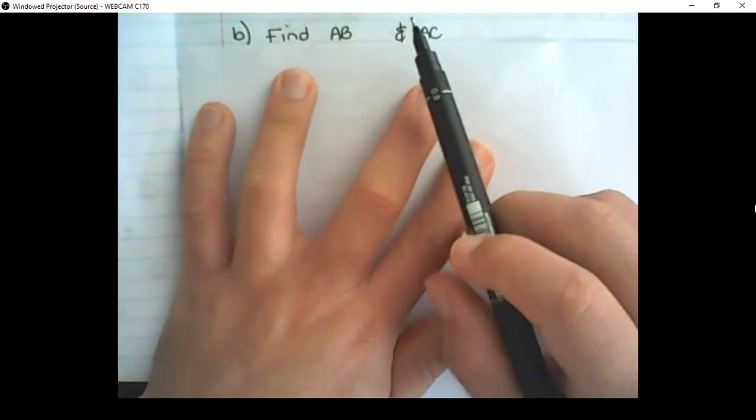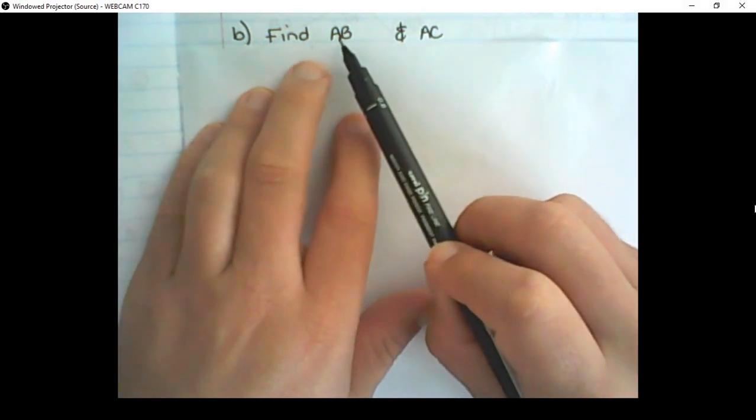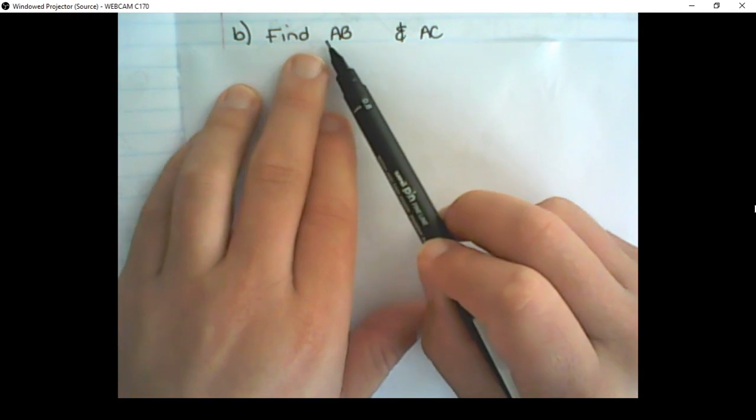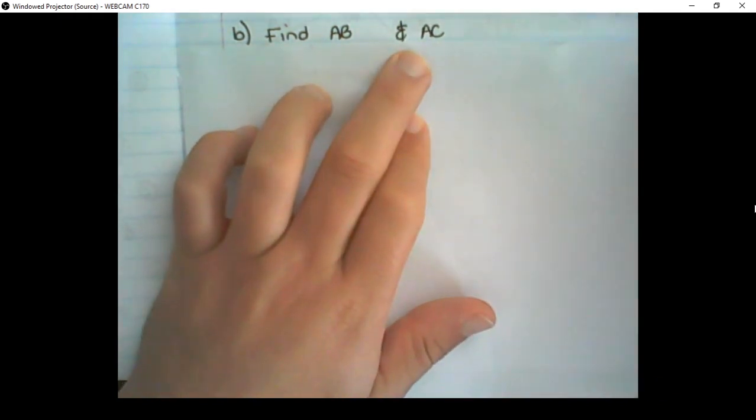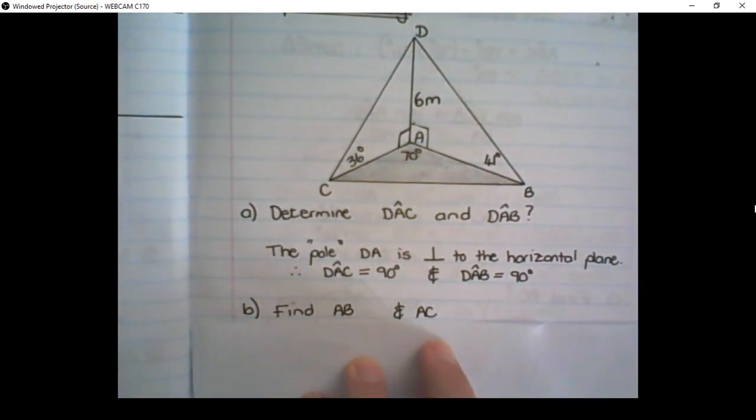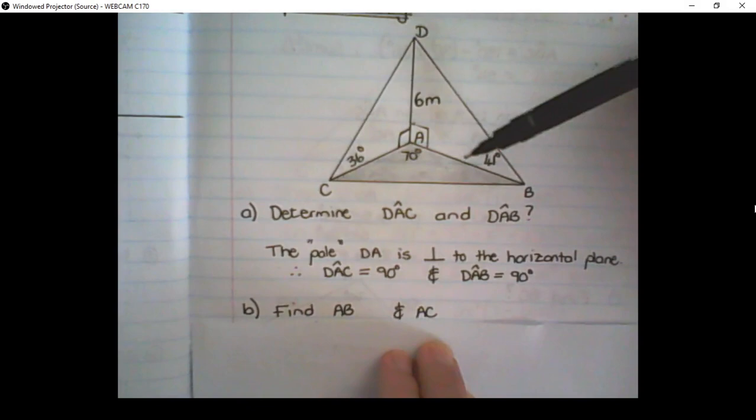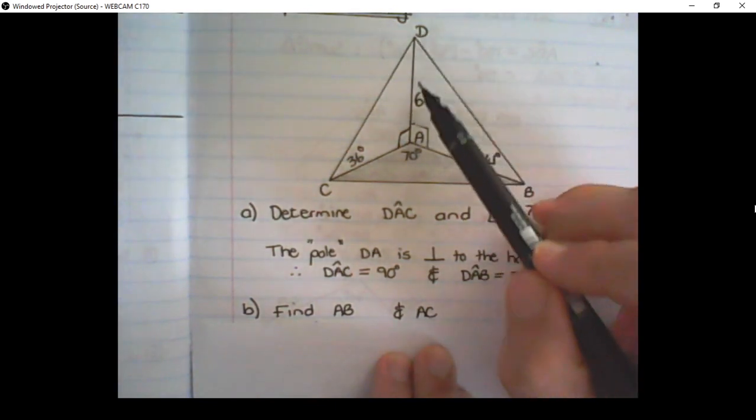The second question that can be asked is to determine lengths of lines. This question asks, find the length of AB and AC. Now, looking at the sketch, AB is in triangle DAB, and AC is in triangle DAC.